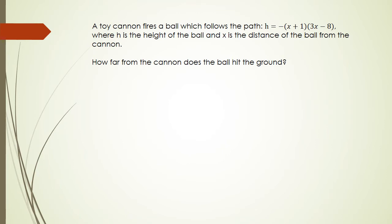We've got a toy cannon that fires a ball which follows the path h = -(x+1)(3x-8), where h is the height of the ball and x is the distance of the ball from the cannon. How far from the cannon does the ball hit the ground? Try and picture what's happening. I'm going to draw a little cannon here, and it's firing a ball. Obviously it's going to look like a parabola because it goes up and comes down. They're telling you that the height of the ball is on the y-axis and x is the distance of the ball from the cannon itself.